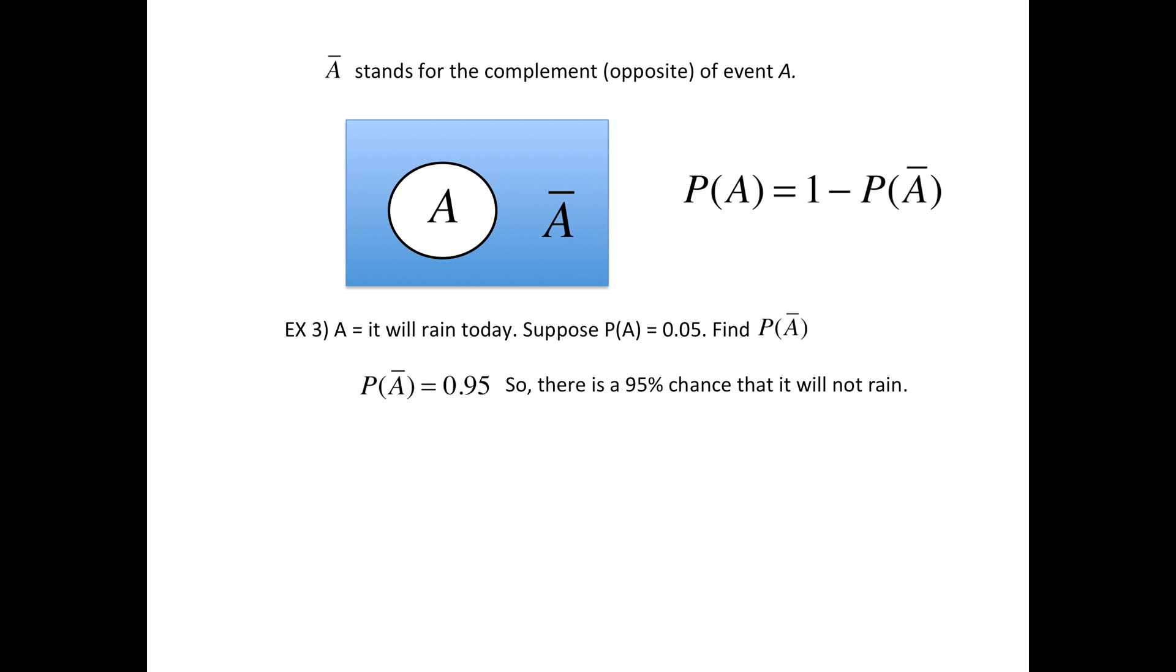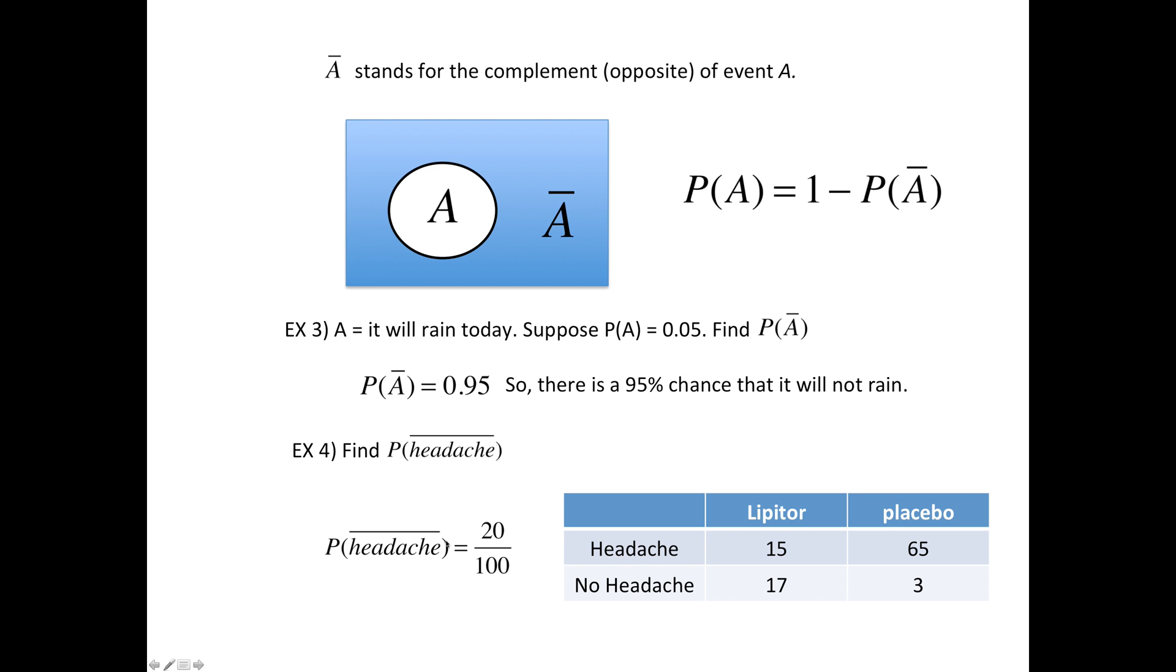The next example: go back to that table with the headache and the Lipitor. What's the probability that it's not a headache? A bar over it means not, means the opposite. So the opposite of headache is no headache. That's these 17 plus 3 people at the bottom—they did not have a headache. So that's 20 out of 100.